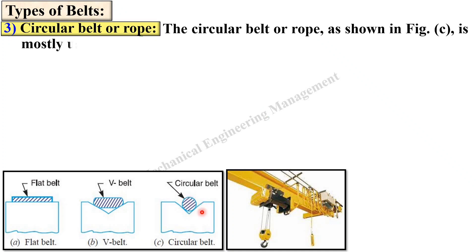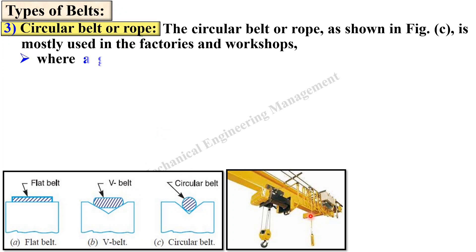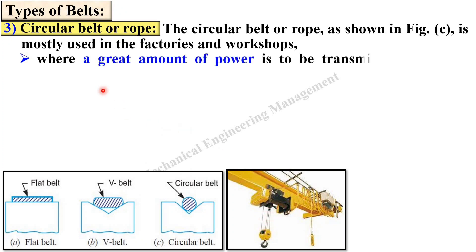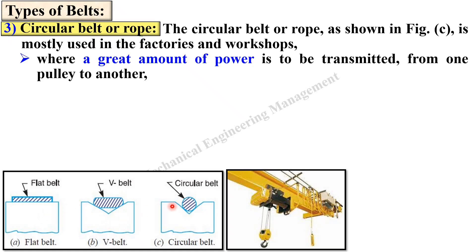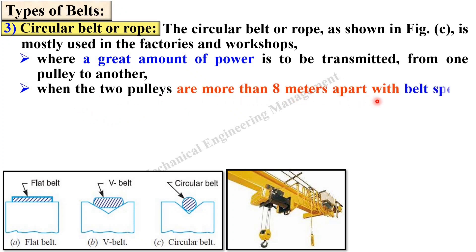The circular belt, sometimes called rope belt, as shown in figure C, is mostly used in factories and workshops where a great amount of power is to be transmitted — unlike the flat belt and V belt which transmit moderate power. The circular belt is used when two pulleys are more than 8 meters apart with belt speed less than 3 meters per second.